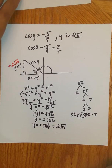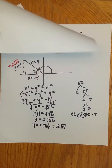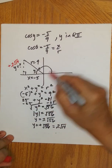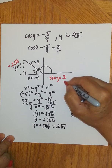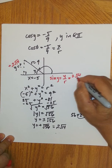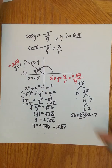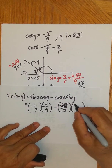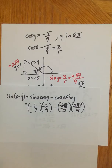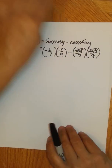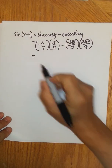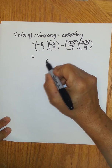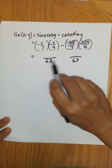We did all of this work so we could fill in the missing piece — sine of y. Using the definition, sine of the angle y is y over r, which is two square root of fourteen over nine. Now we can put all the pieces together and simplify. Both products share the same denominator of sixty-three, so we put everything over sixty-three.